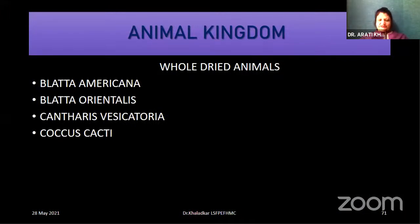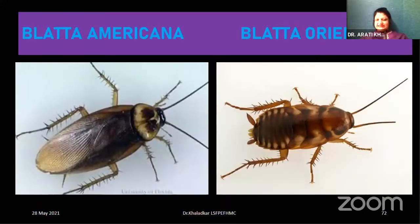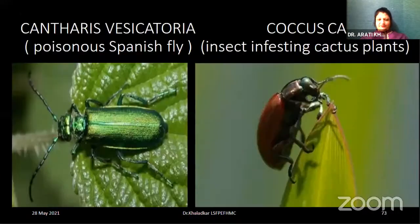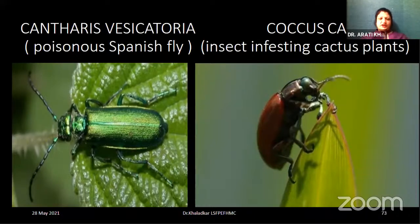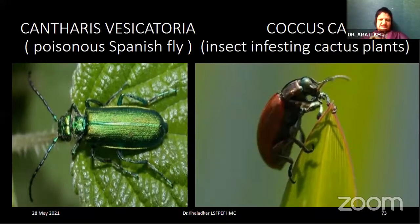Next, examples of dried animals. We have four unique examples: Blatta americana — the American cockroach — and Blatta orientalis — the Indian cockroach. Then Cantharis — the beautiful emerald green-colored Spanish fly, a very poisonous fly also called the blister beetle — Cantharis vesicatoria. And Coccus cacti — an insect infesting only the cactus; therefore its name is Coccus cacti.